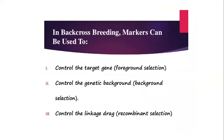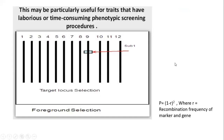In background breeding, markers can be used to control the target gene — this is foreground selection. Markers also control the genetic background, known as background selection, and they control linkage drag, which is known as recombinant selection.